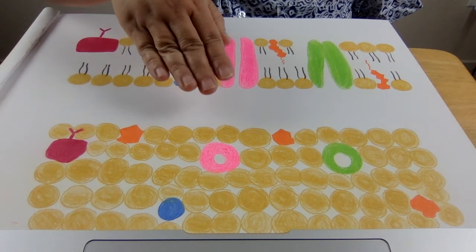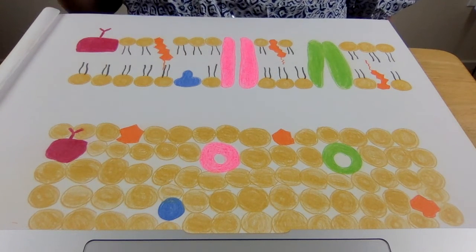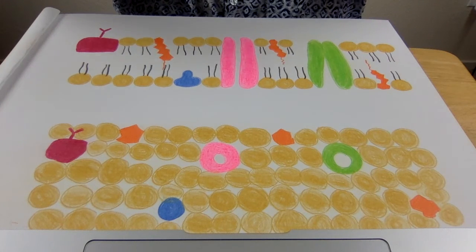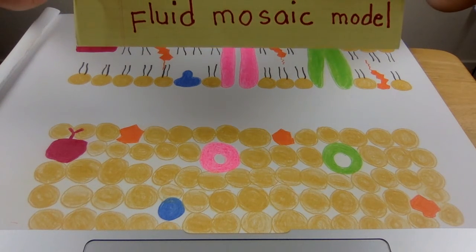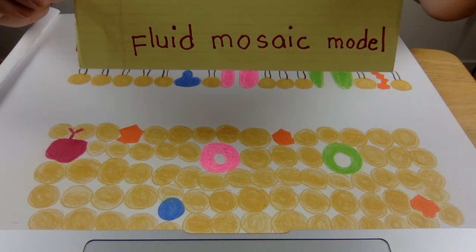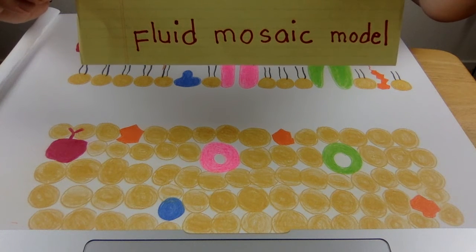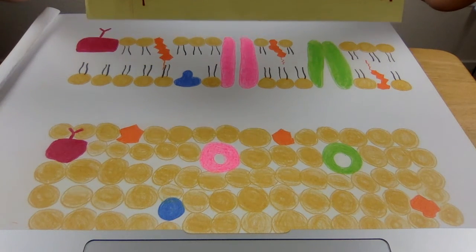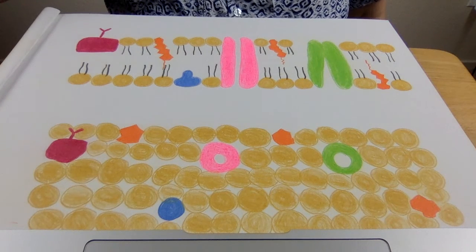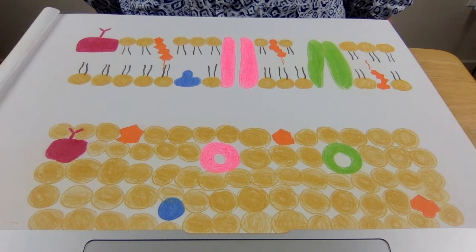We can see its appearance is like mosaic art, which is why it's called the fluid mosaic model of the plasma membrane structure.